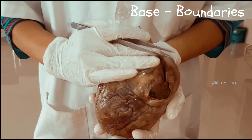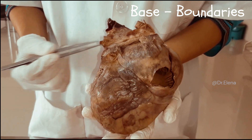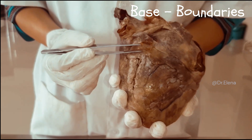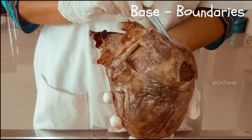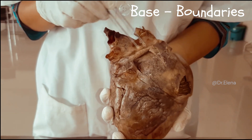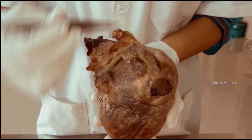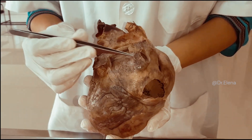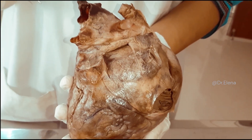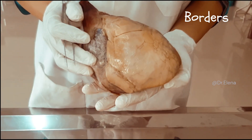Looking at the boundaries of the base: above, we can see the bifurcation of the pulmonary trunk; below, there is a groove between the atria and the ventricles, which is the atrioventricular groove. On the right side we have the right border, and on the left side we have the left border. The structures visible at the base include the superior vena cava and inferior vena cava entering the right atrium, and the four pulmonary veins draining into the left atrium.